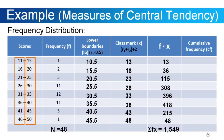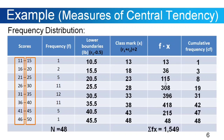Now let's go to the last column in our frequency distribution: cumulative frequency, represented by cf. To compute cumulative frequency, start with the first row frequency — just copy it: 1. On the second row, add the first and second row frequencies: 1 plus 2 gives 3. For the third row, add 1, 2, and 5, which gives 8, and so on.